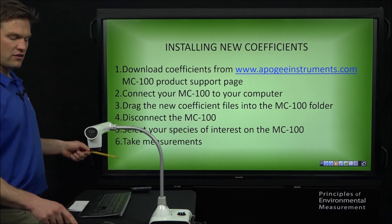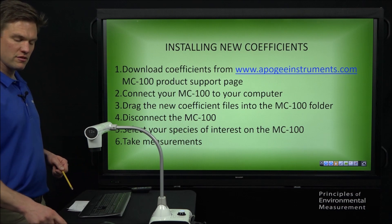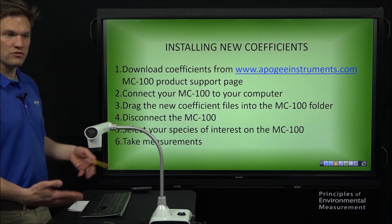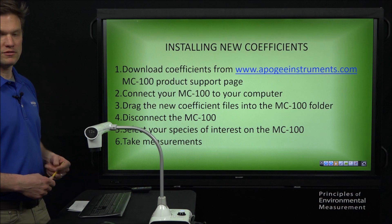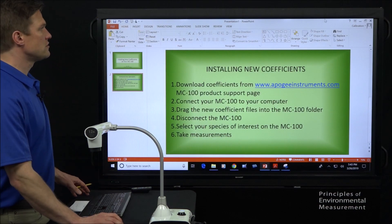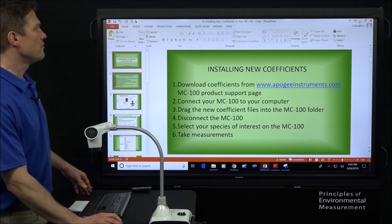you disconnect it, then you navigate through the menu on the MC100 to cannabis or grape or whatever species you please. And then you can start taking measurements. So, let's show you how to make all this happen.